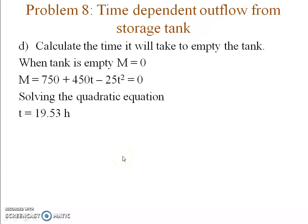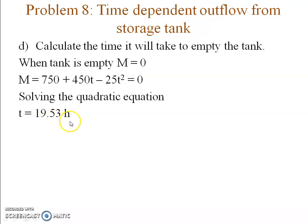For the last part, we calculate the time it will take to empty the tank. When the tank is empty, m = 0. Setting 750 + 450t − 25t² = 0 gives a quadratic equation. Solving it gives t = 19.53 hours, at which point the tank will drain completely.